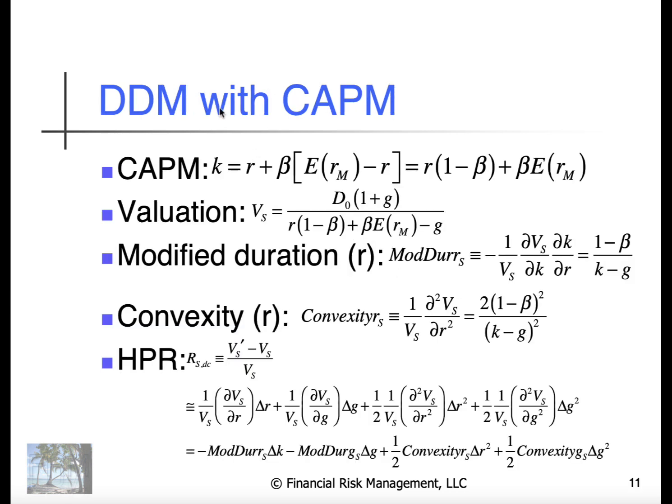With the dividend discount model, if we assume that the cost of equity capital is based on capital asset pricing model, then we can redo the calculations. The valuation model adjusted for CAPM can be expressed in this way.